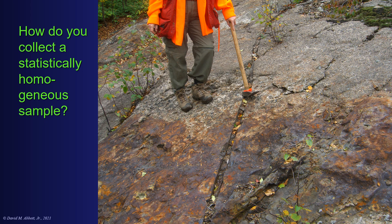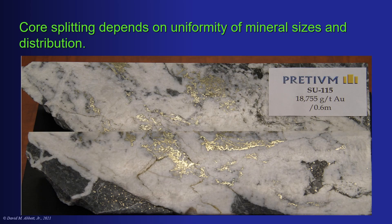Core splitting depends on the uniformity of mineral sizes and distribution throughout the core. Here we have a picture of two pieces of Pretium Resources core from their Brucejack deposit, where the mineral is actually electrum — around 60% gold and 40% silver. If we saw this core in half, it's quite clear that each half would provide a different assay, meaning we can't split core and get reasonable results.